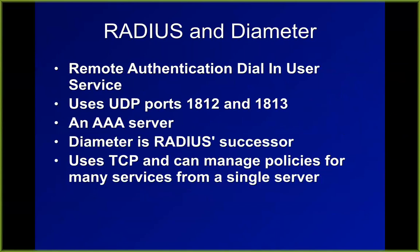RADIUS and DIAMETER are commonly used for authentication of users that connect from a distance. RADIUS was the original — so old that dial-in is part of the name, intended to run over 56K dial-in connections, though you can use it for modern fast connections too. These are AAA servers. RADIUS was considered less secure for using UDP. DIAMETER uses TCP.